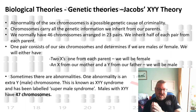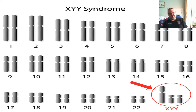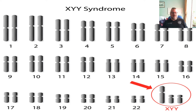This is known as XYY syndrome and has been labelled 'super male syndrome.' Males with XYY have 47 chromosomes. On the PowerPoint backdrop you can see the 23rd chromosome pair showing one X and two Y chromosomes.